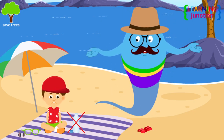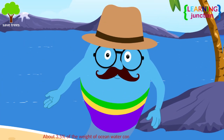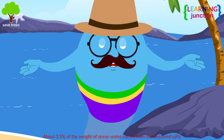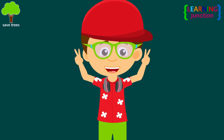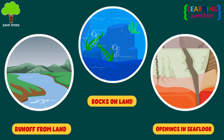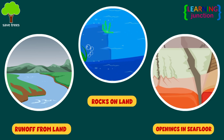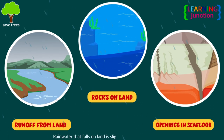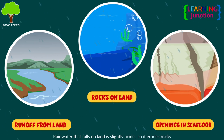You cannot drink this water — ocean water is salty. Salt in the ocean comes from two sources: runoff from the land and openings in the seafloor. Rocks on land are the major source of salts dissolved in seawater. Rain water that falls on land is slightly acidic, so it erodes rocks.